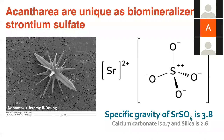Among rhizarians and really among all organisms, acantharians are unique because they biomineralize strontium sulfate. Strontium sulfate is very heavy — it has a specific gravity of 3.8, compared to calcium carbonate's 2.7 and silica's 2.6. These strontium skeletons cause acantharians to sink very quickly, and combined with their relatively large size, this fast sinking rate means acantharians disproportionately contribute to carbon export in oligotrophic systems.